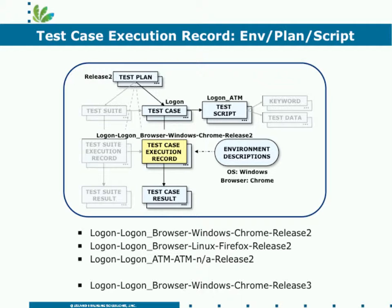If you look at the name of the test execution record, the very first one is for the logon test case. It's using the logon under browser script, being tested in the Windows world against Chrome and for release two. RQM lets you automatically generate all of the appropriate test case execution records for each test case you have written and each release you have defined. When you go to execute a test case, you actually execute a test case execution record that gives you all the details you need to run the test and record the results correctly for a very specific set of environments, releases, and scripts.